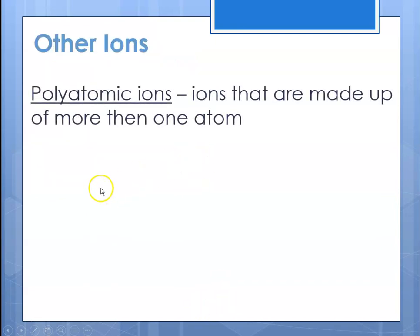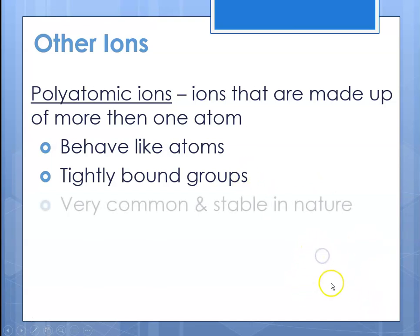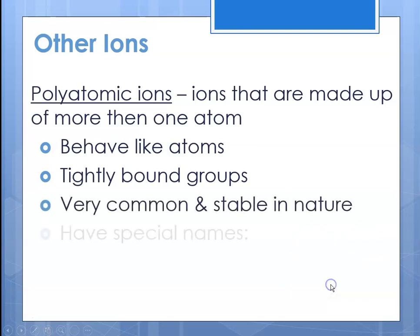Other ions we talk about are polyatomic ions. These are ions made up of more than one atom. The atoms within a polyatomic ion are covalently bonded, but they carry a net negative charge typically — there are a few positive ones. They behave like atoms, are tightly bound groups, and are very common and stable in nature.